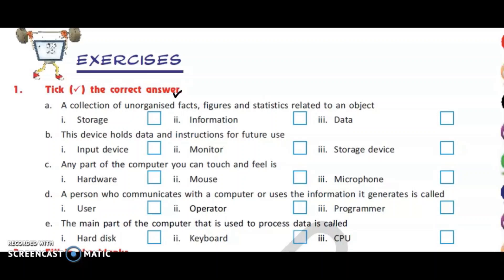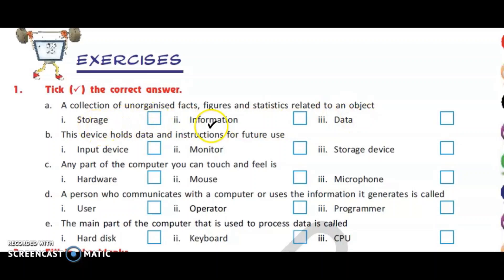You have to make an interleave copy or a ruled copy for computer science. Our first question is: a collection of unorganized facts, figures and statistics related to an object are called as — storage, information, or data? The answer is data.